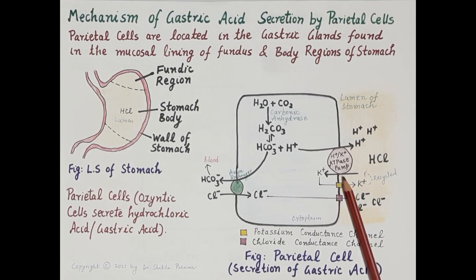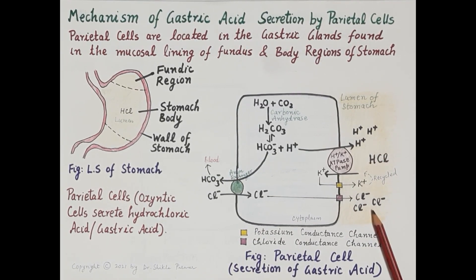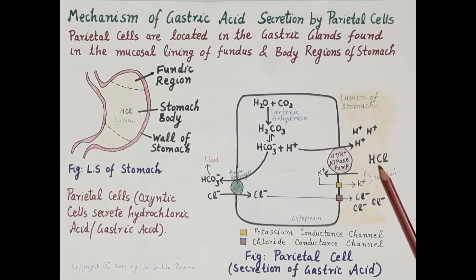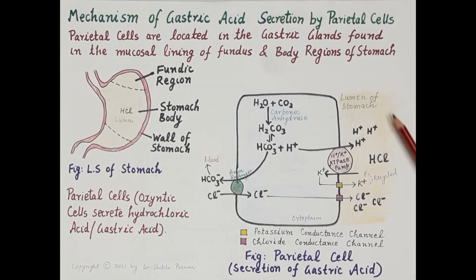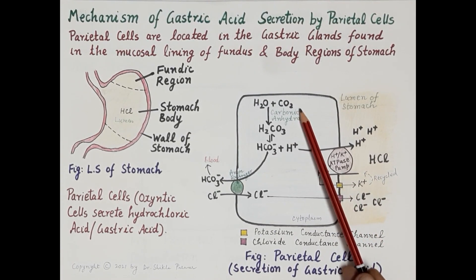This hydrogen-potassium ATPase secretes hydrogen ions, which then associate with chloride ions to produce hydrochloric acid. This hydrochloric acid is secreted into the gastric pit of the gastric glands, from where it is released into the lumen of the stomach.